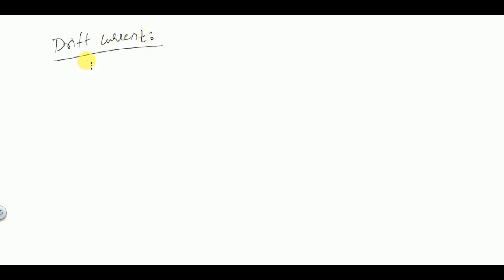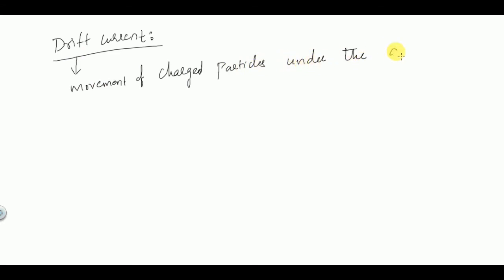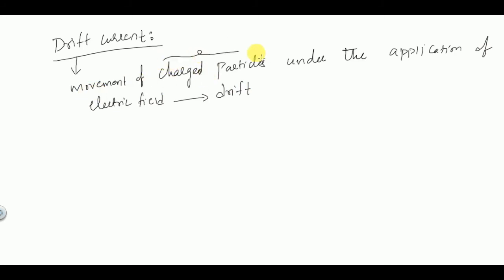Next we will discuss drift current. What is drift? The movement of charged particles under the application of an electric field is called drift. The current due to this drift process is called drift current. During drift, when movement of charged particles takes place, there will always be a current produced inside a semiconductor.